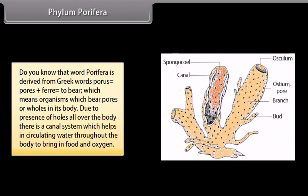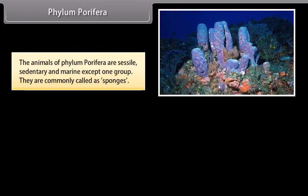Phylum Porifera. The word Porifera is derived from Greek words: porus, meaning pores, plus phere, meaning to bear — organisms which bear pores or holes in the body. Due to the presence of holes all over the body, there is a canal system which helps in circulating water throughout the body to bring in food and oxygen. The animals of phylum Porifera are sessile, sedentary, and marine, except one group. They are commonly called sponges.